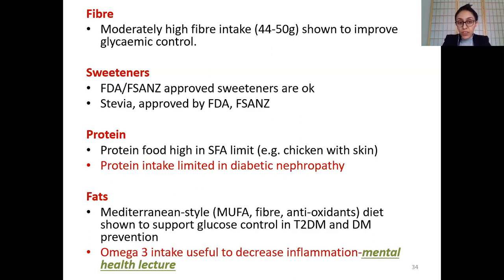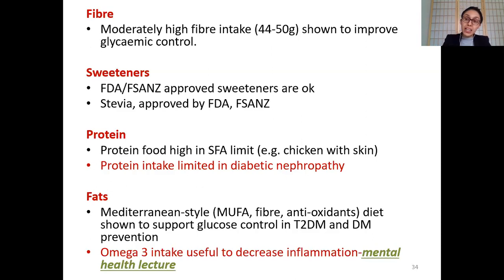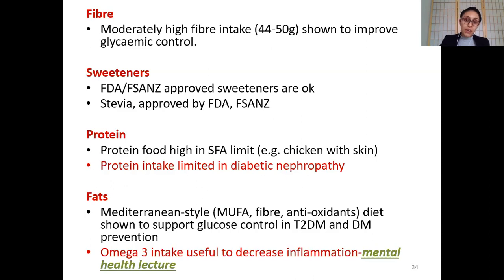Regarding protein: animal and meat proteins are high in saturated fat, so lean protein is recommended for all individuals — healthy, diabetic, or obese. However, when secondary conditions such as diabetic nephropathy develop — meaning impaired kidney functioning — protein intake must be moderated and limited. We will look at how diabetes causes diabetic nephropathy soon.